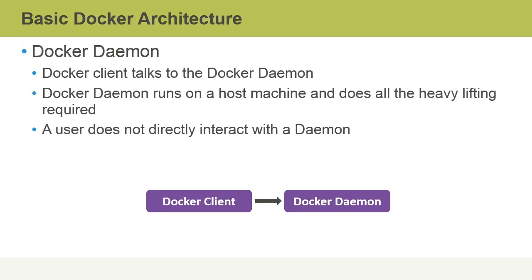Talking a little more about docker-daemons: the docker-client talks to the docker-daemon only, and never to the container at all. All the commands that issue from a docker-client are interpreted by the docker-daemon to be executed at the container level. And the important role that the docker-client plays on a host machine is that it does all the heavy lifting that's required.